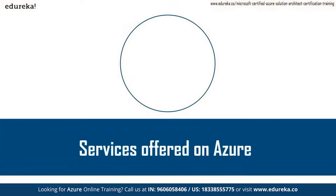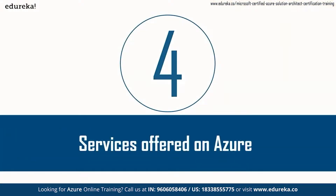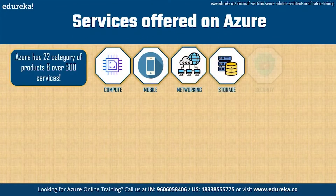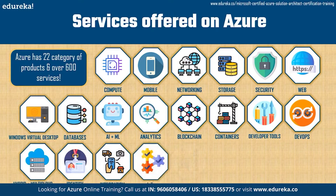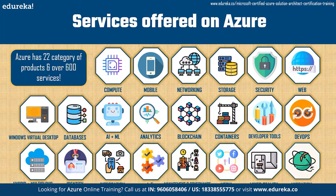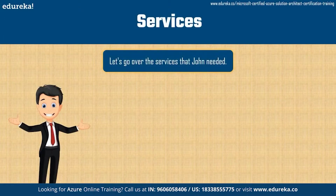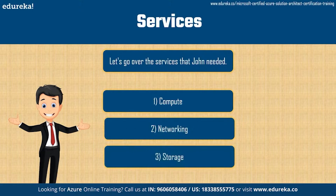Now let's discuss the services offered on Azure. Azure has 22 categories of products and over 600 services, so we can't cover them all — check Azure's website for the full list and comment on this video with any questions. John specifically needed three services: compute, networking, and storage. Let's look at each in a bit of detail.